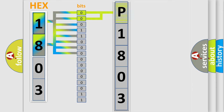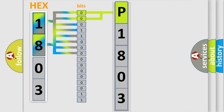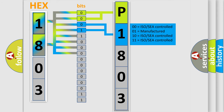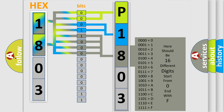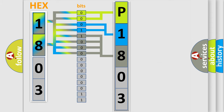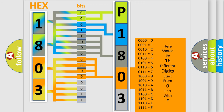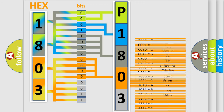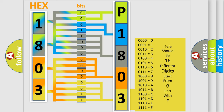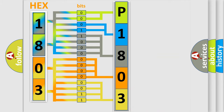By combining the first two bits, the basic character of the error code is expressed. The next two bits determine the second character. The last four bits of the first byte define the third character of the code. The second byte is composed of a combination of eight bits. The first four bits determine the fourth character of the code, and the combination of the last four bits defines the fifth character. A single byte conceals 256 possible combinations.